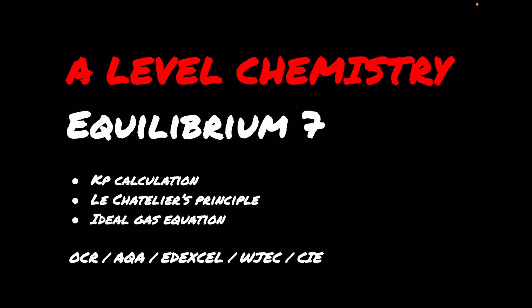Got another exam question walkthrough for A-level chemistry. This is number 7 in the equilibrium playlist. The question covers a Kp calculation, some questions on Le Chatelier's principle, and then it finishes off with an ideal gas equation calculation.